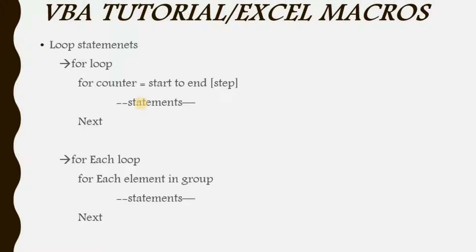The syntax for the For loop is a little bit different from other programming languages — it looks similar to Python. Here, the counter is a variable like i or j. You write: For counter equals to starting value To n, with an optional Step value in brackets. By default the step value is 1, but if you want to increment by 2 each step, you write Step 2. For example: For i = 0 To 100 Step 2.